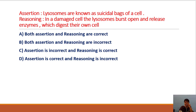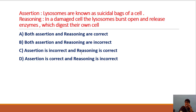Assertion and reasoning type question from NAS (National Achievement Survey): Lysosomes are known as suicidal bags of cells. Reasoning: in a damaged cell, lysosomes burst open and release enzymes which digest their own cell. Options: both assertion and reasoning are correct; both are incorrect; assertion incorrect reasoning correct; assertion correct reasoning incorrect. The correct answer is option A — both assertion and reasoning are correct.